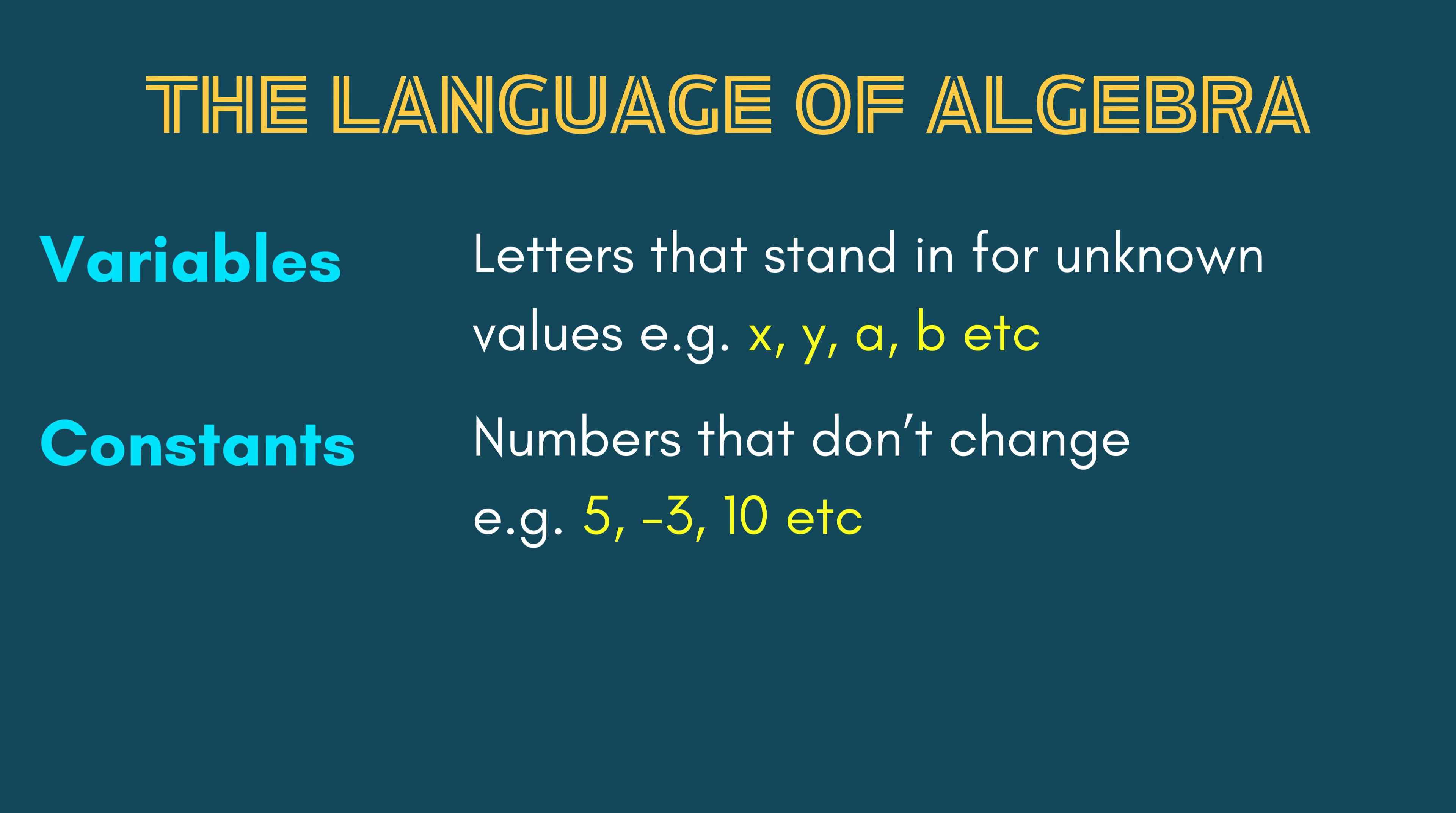Constants are numbers that don't change, for example, 5, minus 3, and 10. Coefficients are numbers multiplied by variables, for example, in 3X, the number 3 is the coefficient of the variable X.